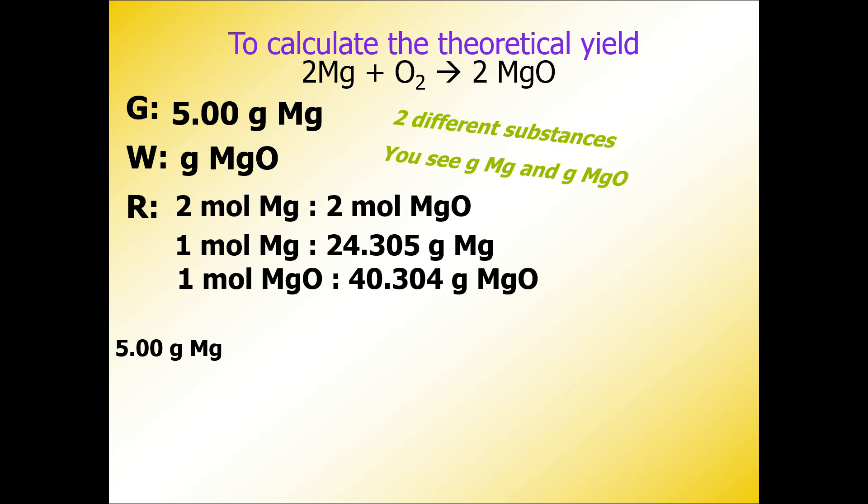There's the given over one. We need grams of magnesium to cancel with grams of magnesium diagonally. Here's where we're getting that info: 1 mol Mg over 24.305 g Mg.